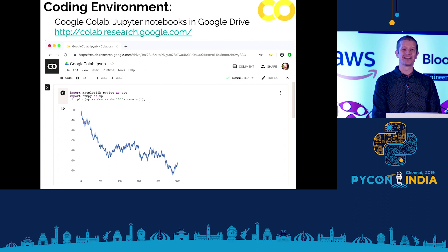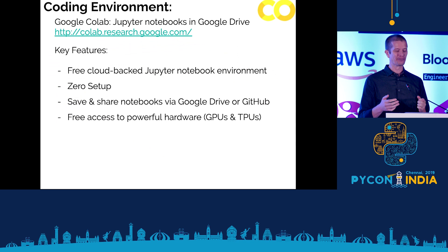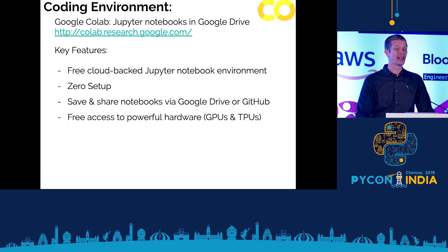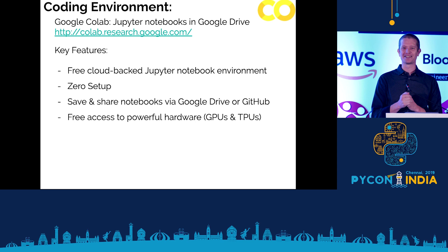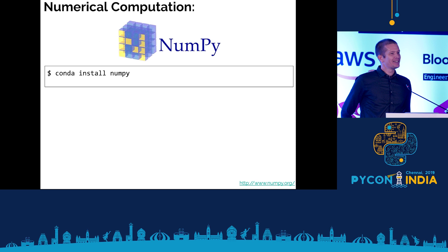A similar project is Google Colab, which I've worked on at Google in the last year or so. It's basically a Jupyter notebook on top of Google's computing infrastructure, backed by Google Drive. If you use Google Docs, Colab lets you store Jupyter notebooks on Google Drive and execute them in the cloud for free. It's zero setup, you can share with people, and you have free access to hardware like GPUs and TPUs for powerful computing without having to invest in your own setup locally.